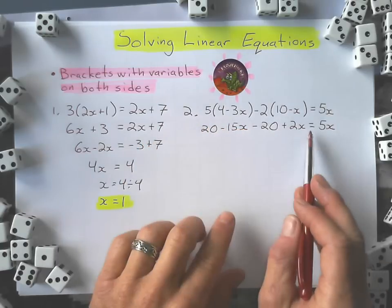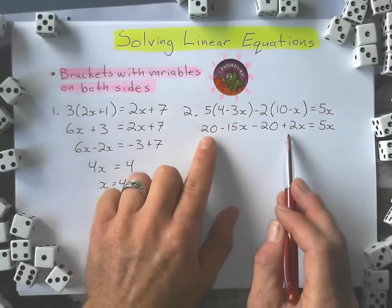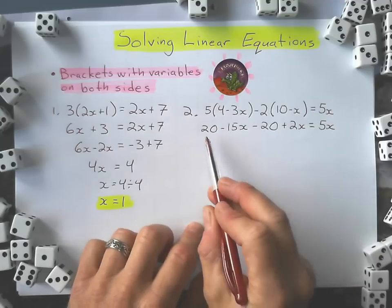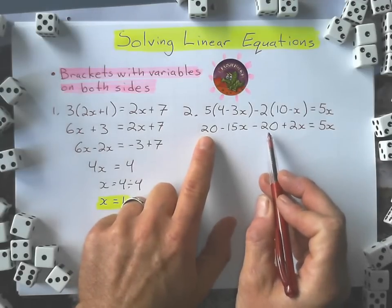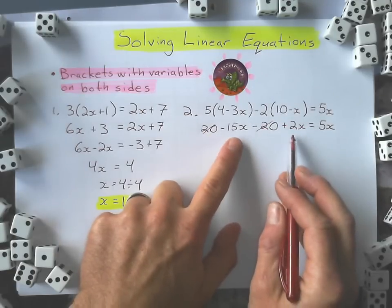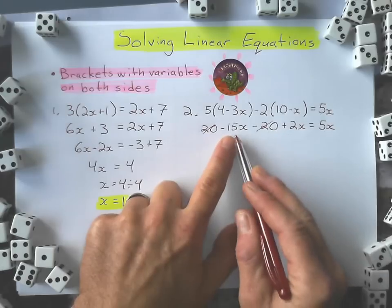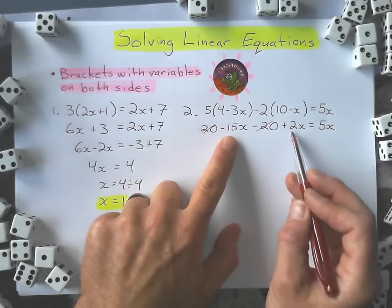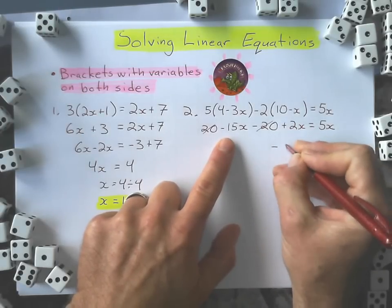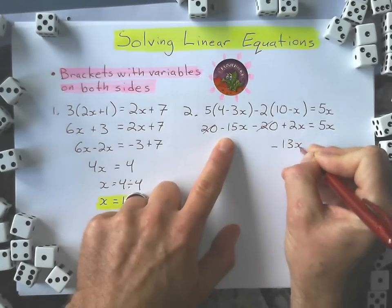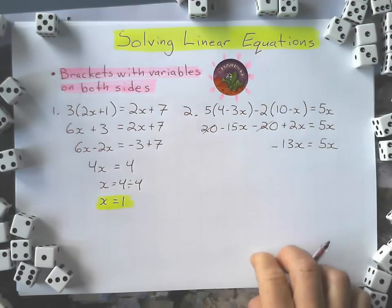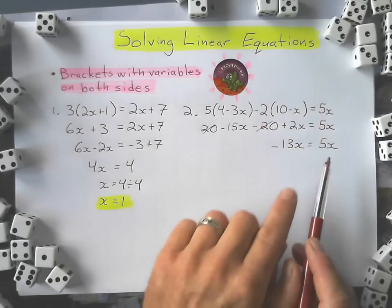So I expand it and I get this expression right here. The first thing I do before I start moving the terms to the other side of the equal sign is I need to clean this up. I need to collect like terms just on the left side of the equation. So I can look at the constant terms, and 20 minus 20, well that gives me 0, so those cancel each other out. And negative 15x plus 2x, you can actually do that on the calculator because when you collect like terms you're just looking at the coefficients. Negative 15 plus 2, which gives me negative 13x, equals 5x.